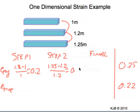For the true strain, we're going to need to take the log of 1.2 over 1, and we're going to need to take the log of 1.25 over 1.2.